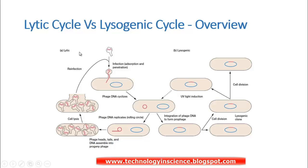Looking at the overview again: in the Lytic phase, once the bacteriophage enters, it injects the DNA into the bacterial cell, starts to replicate, uses the host machinery to synthesize the phage head and tail, assembles into new viral particles, and is released by cell lysis — allowing new viral particles to infect many other bacteria. In the Lysogenic phase, once the bacteriophage DNA enters the bacterial cell, it gets incorporated and replicates along with the bacterial genome. Due to stress or UV light, this viral DNA can get excised from the bacterial genome, enter the Lytic phase, and the whole process continues.